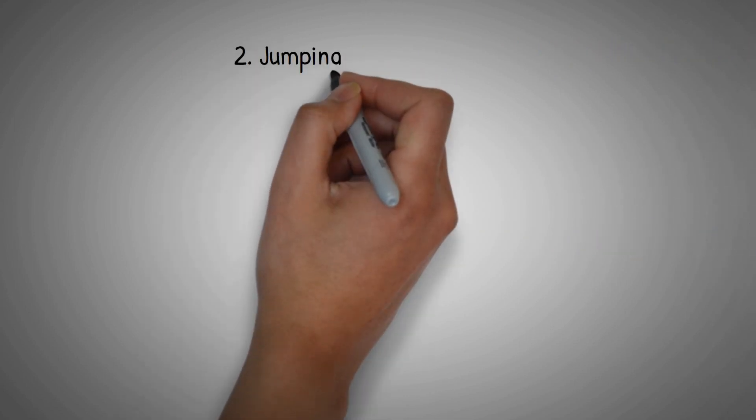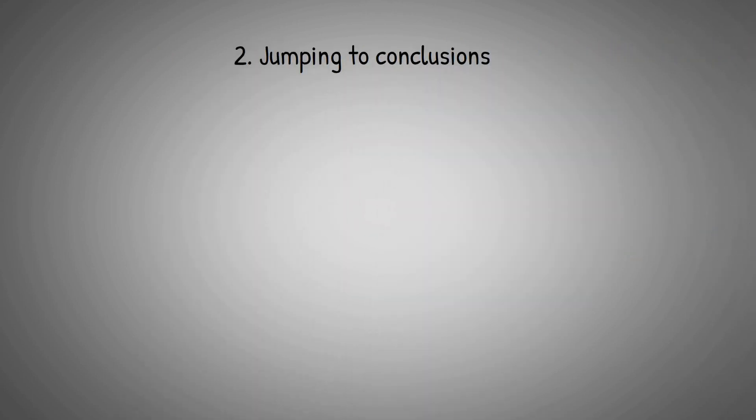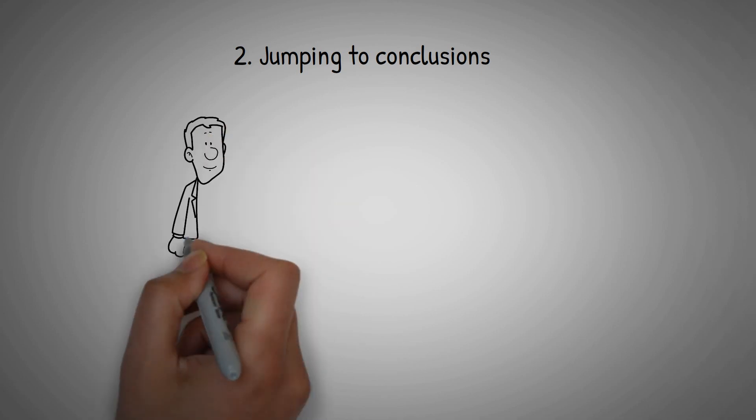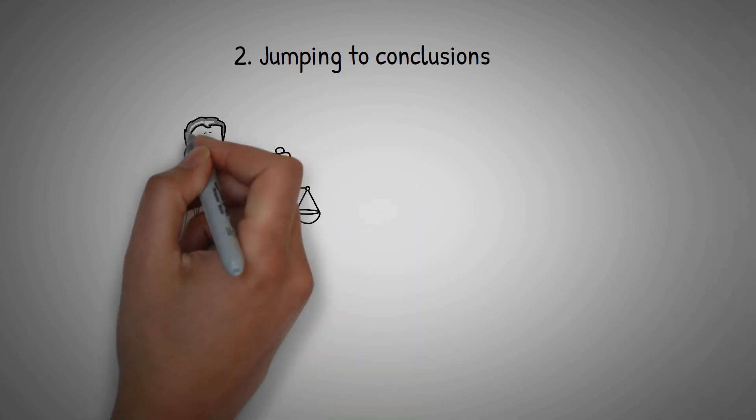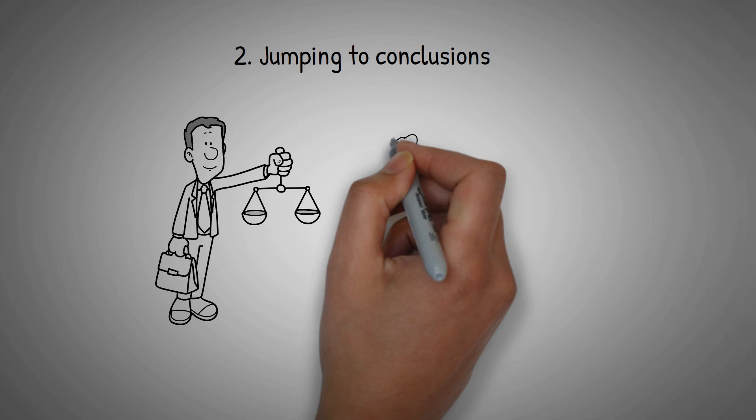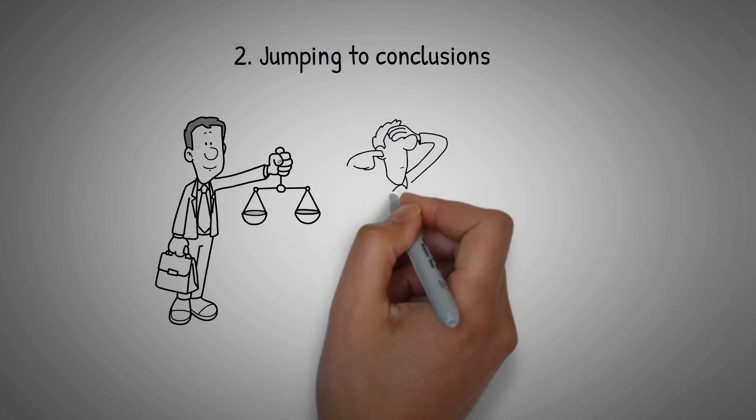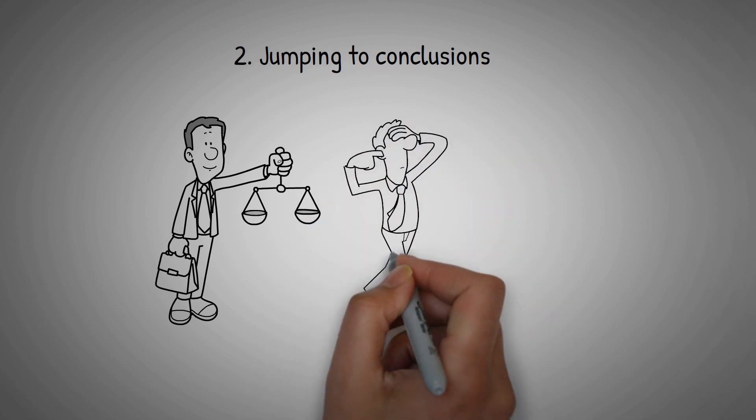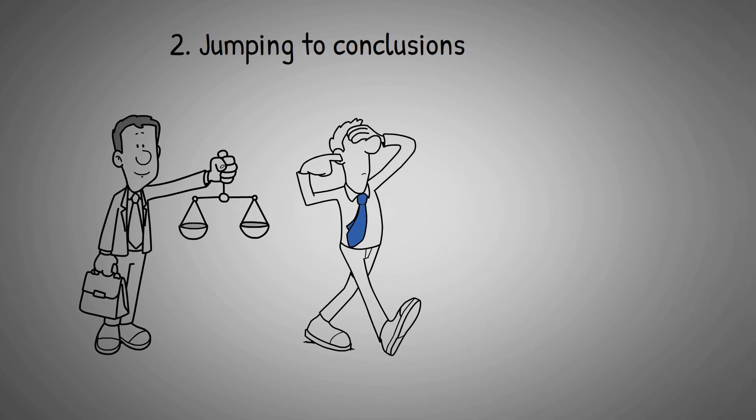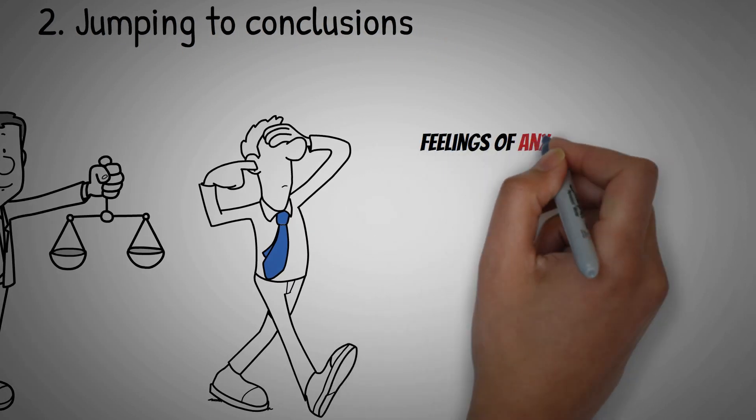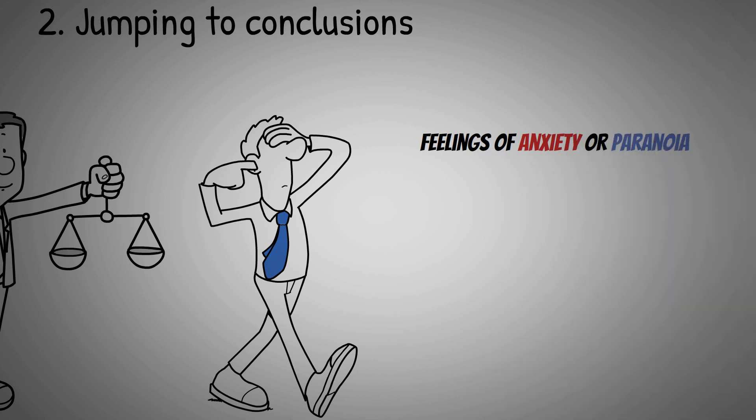Another unhelpful thinking pattern is jumping to conclusions, which is when we make assumptions or judgments without enough evidence. For example, you might assume that someone doesn't like you because they didn't say hello to you in the hallway, when in reality, they might have been distracted or in a hurry. This kind of thinking can lead to feelings of anxiety or paranoia and might even make you avoid social situations altogether.